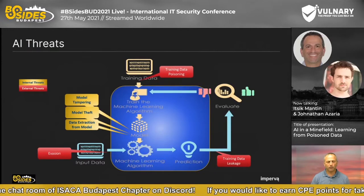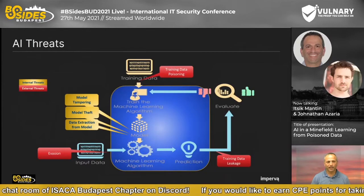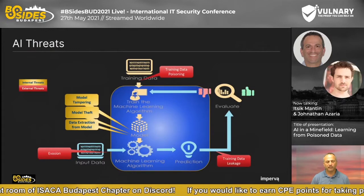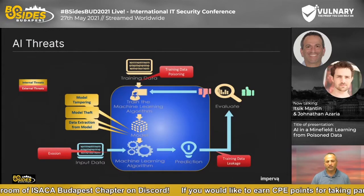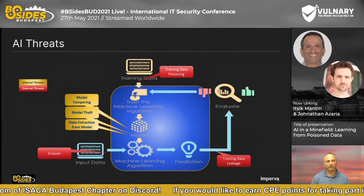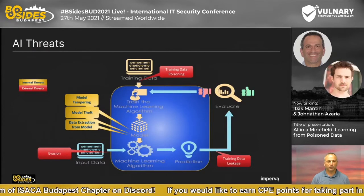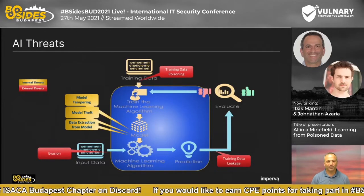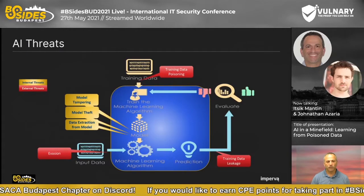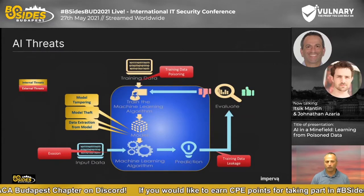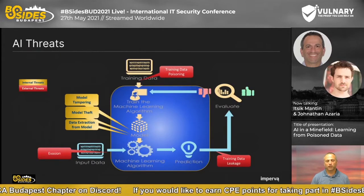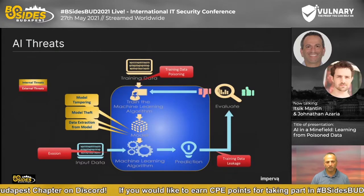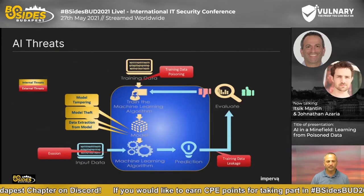A very concerning example is a traffic sign — a stop sign — where someone adds a couple of stickers, and suddenly the AI engine of an autonomous car looks at this stop sign and says it's a speed limit sign, which can have devastating consequences. From what I've found, every time researchers try to build adversarial examples for a machine learning system, it was a pretty easy thing to do.